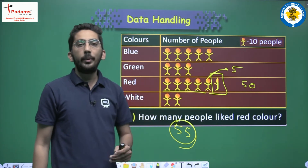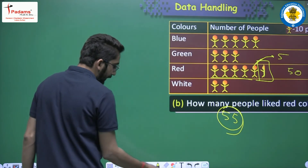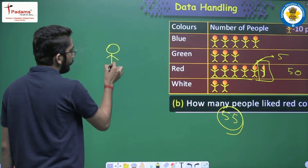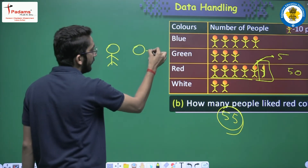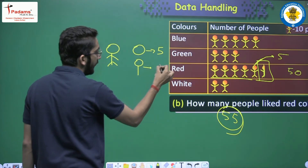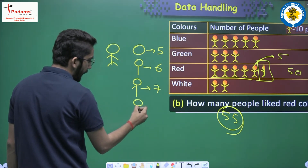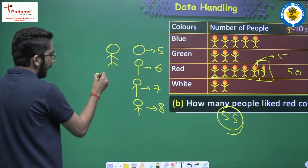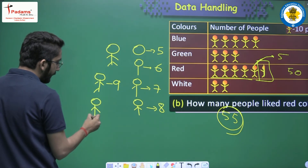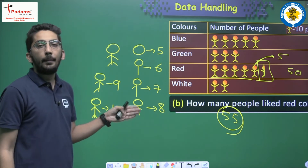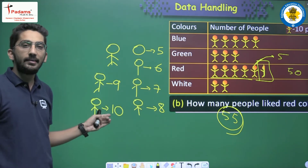You can also represent partial images in more detail. A complete image represents 10. If you break it: showing just part of the image can represent 5, 6, 7, 8, or 9 — adding one element at a time increases the count by 1. A complete image is 10. This is another way to represent fractional counts in a pictograph.